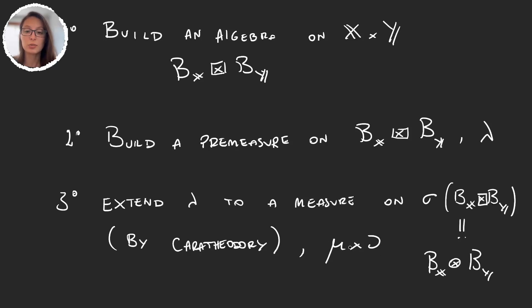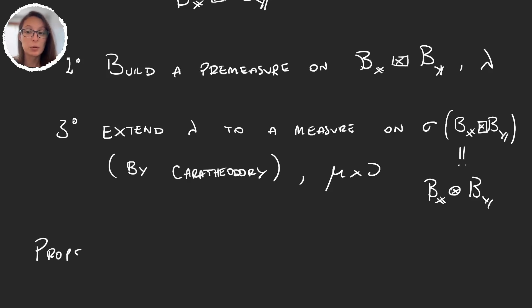This is the standard notation for the product measure. And it's not exactly the product of two measures. That doesn't make any sense. It's just one symbol to represent a new measure. Could have been lambda if we wanted to. And now this measure will satisfy the properties that we want.